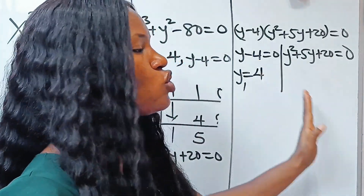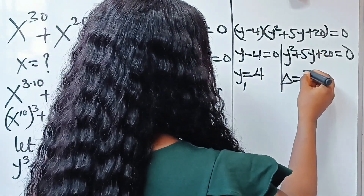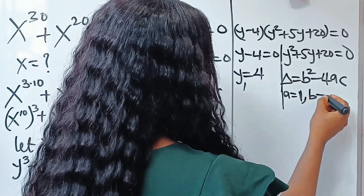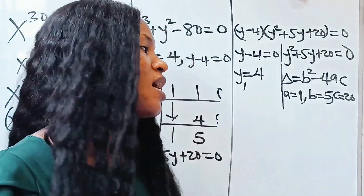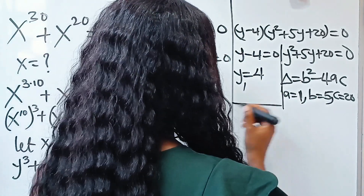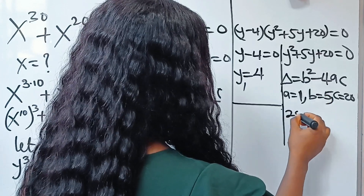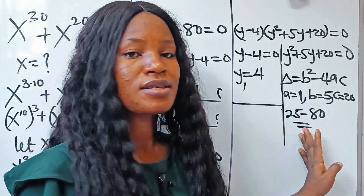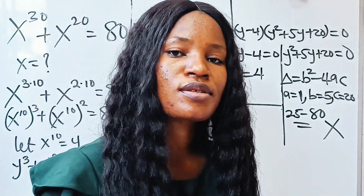The discriminant is b squared minus 4ac. Here a equals 1, b equals 5, and c equals 20. So b squared is 25, minus 4 times 1 times 20 which is 80, giving 25 minus 80, which is less than 0. That means we get no real roots from this quadratic, so we drop it. Our only real solution is y equals 4.